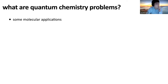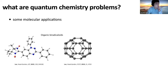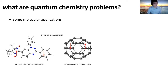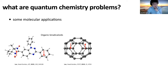We largely spend most of our time on molecular applications. One class of examples I really enjoyed working on is organic biradicaloids. They're made of carbon, hydrogen, oxygen, and nitrogen — very boring-looking compounds. But what's interesting is that they carry unpaired electrons, and these molecules are stable at ambient conditions. These unpaired electrons are antiferromagnetically coupled, forming an open-shell singlet that is stable. Whether a given molecule is a biradicaloid, or even a stable biradicaloid, are questions that quantum chemistry methods can answer.